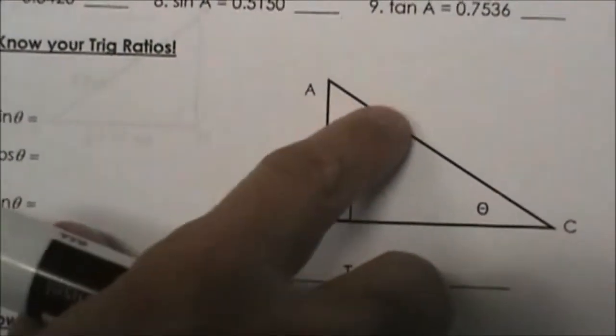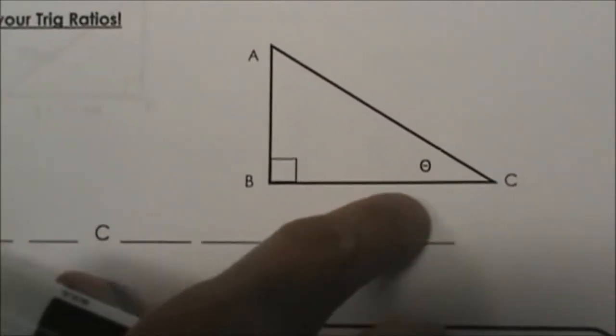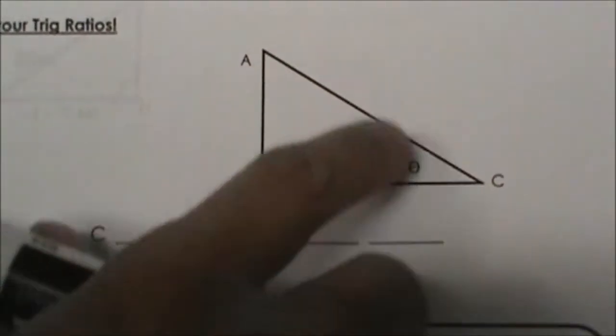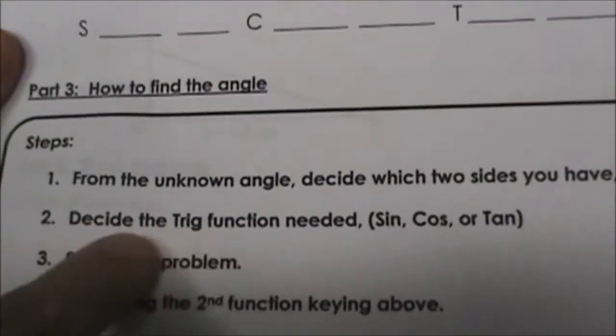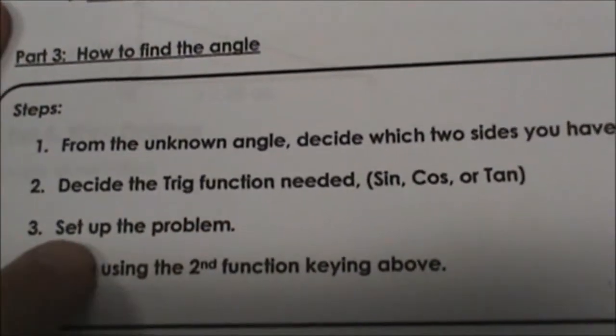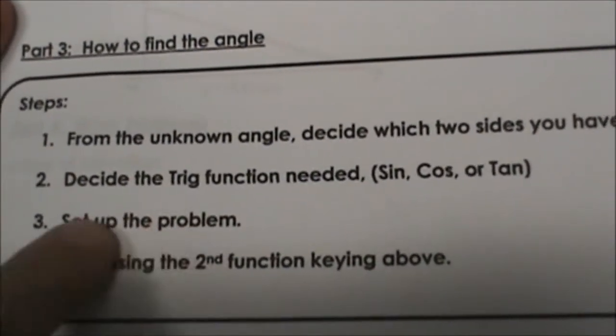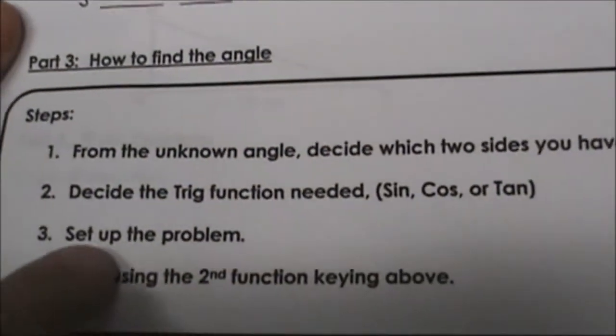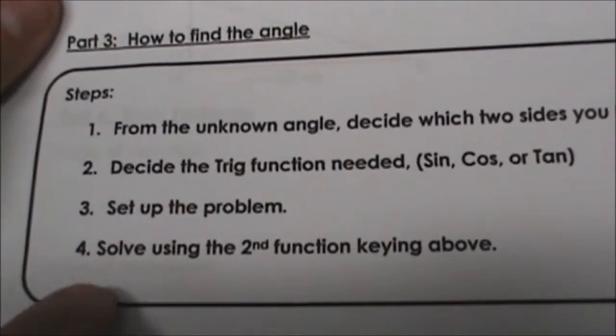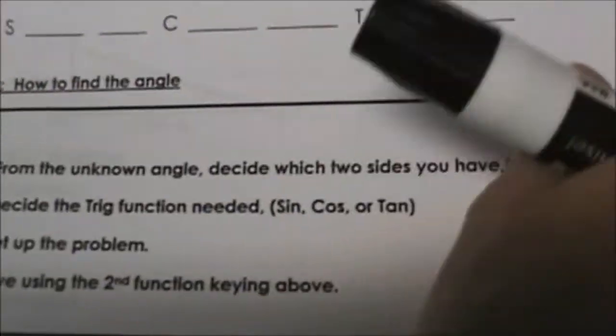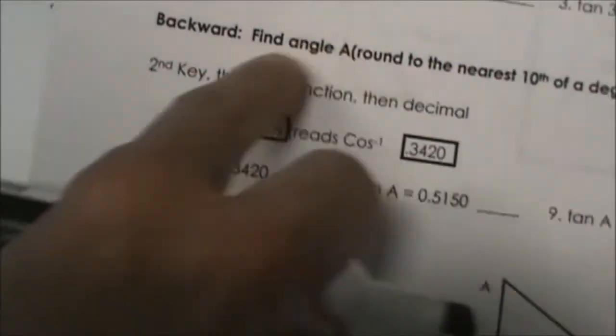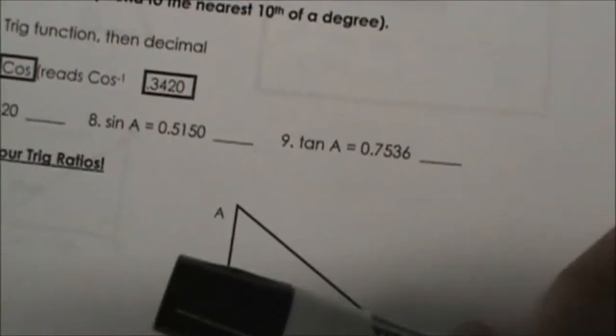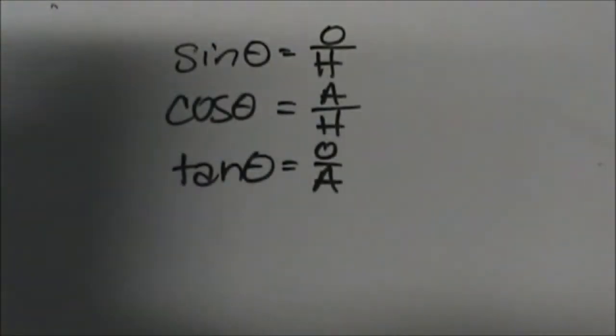You look at the two that you're given - if you have adjacent and hypotenuse you would use cosine. That's how you decide which trig function. Then we're going to set the problem up, but instead of the variable being x in the proportion, the variable is going to be the angle. Then we're going to solve using this second function key. Let's go through a practice problem.